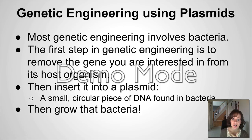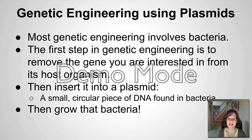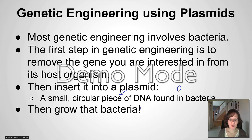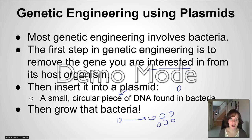Genetic engineering is the last big topic, using plasmids. Most genetic engineering involves bacteria. The first step is to remove the gene you're interested in from the host organism. Then you insert that into a plasmid — a small circular piece of DNA found in bacteria. Humans and most mammals generally don't have plasmids, but bacteria have this small piece of circular DNA inside their cells. Once that bacteria has the gene of interest, we simply grow and replicate that bacteria so that we have a large amount of bacteria, and therefore a large amount of the gene that we want.